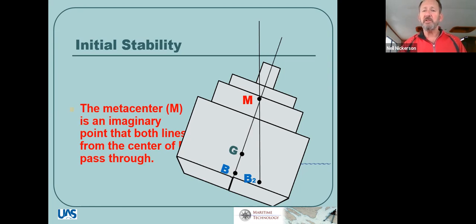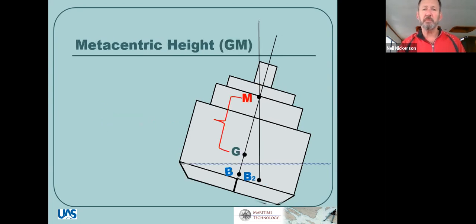Metacenter is an imaginary point where both lines from the center of buoyancy pass through. And our relationship between our center of gravity and the metacenter is our whole stability problem. It tells us whether we're positive stability, negative stability, or neutral stability.